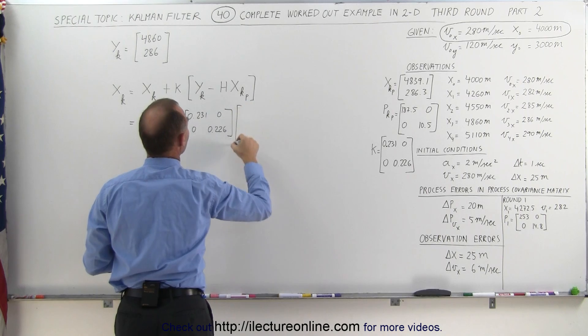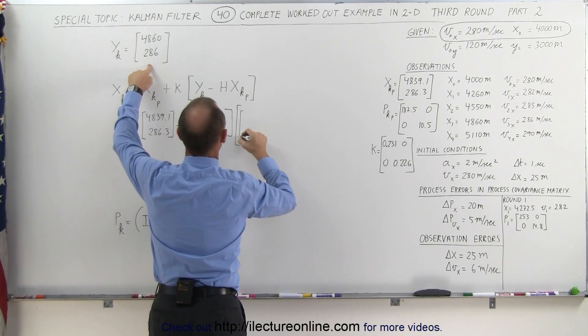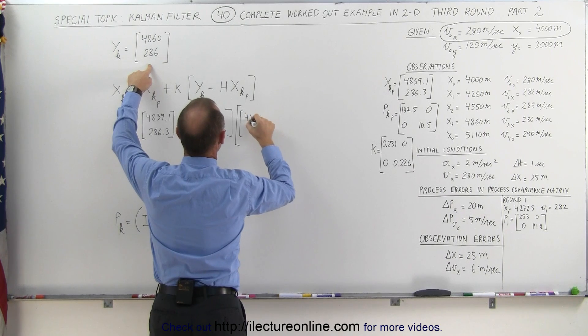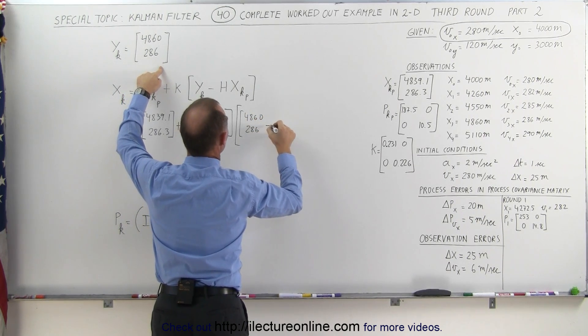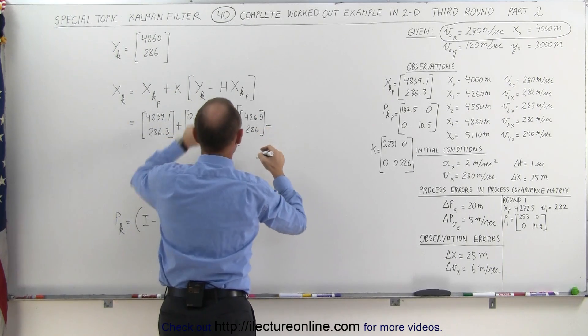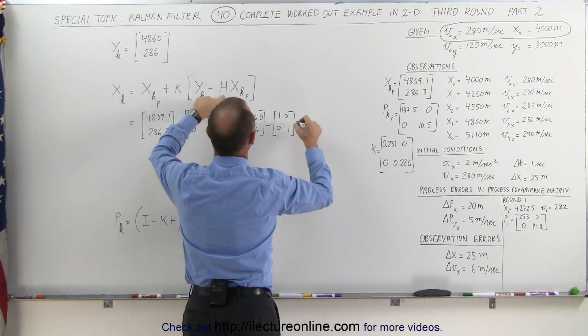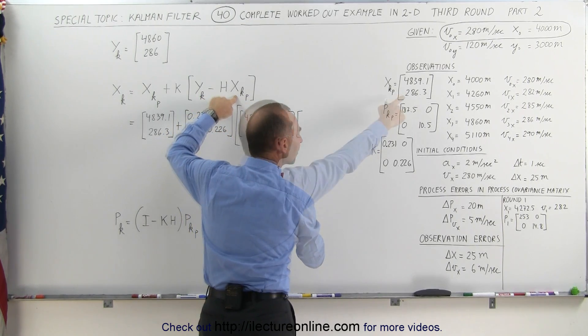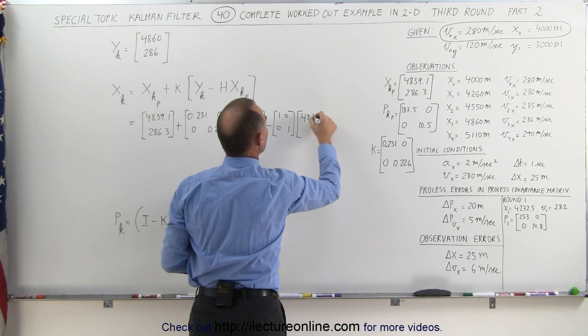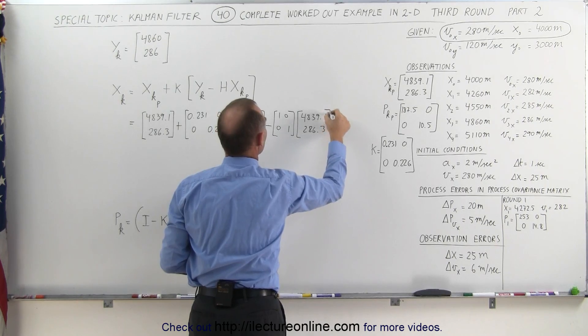Multiplied times the Y matrix—that's the measured value matrix: 4860, 286. Subtract from that the H matrix, which in this case is going to be the identity matrix, multiplied times the predicted state matrix, which is 4839.1 and 286.3.